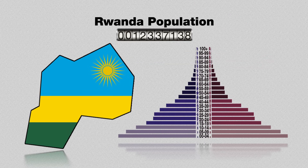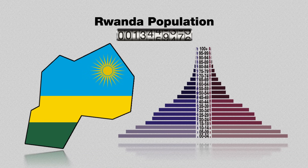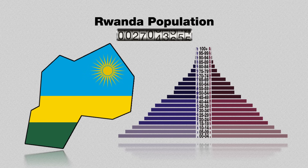For example, Rwanda's population pyramid shows it to be a fast-growing country. With most of the population being in the youngest age groups at the bottom of the pyramid, the number will grow rapidly in the coming years. As today's children reach their reproductive years and have children of their own, the total population is almost certain to double within the next few decades.